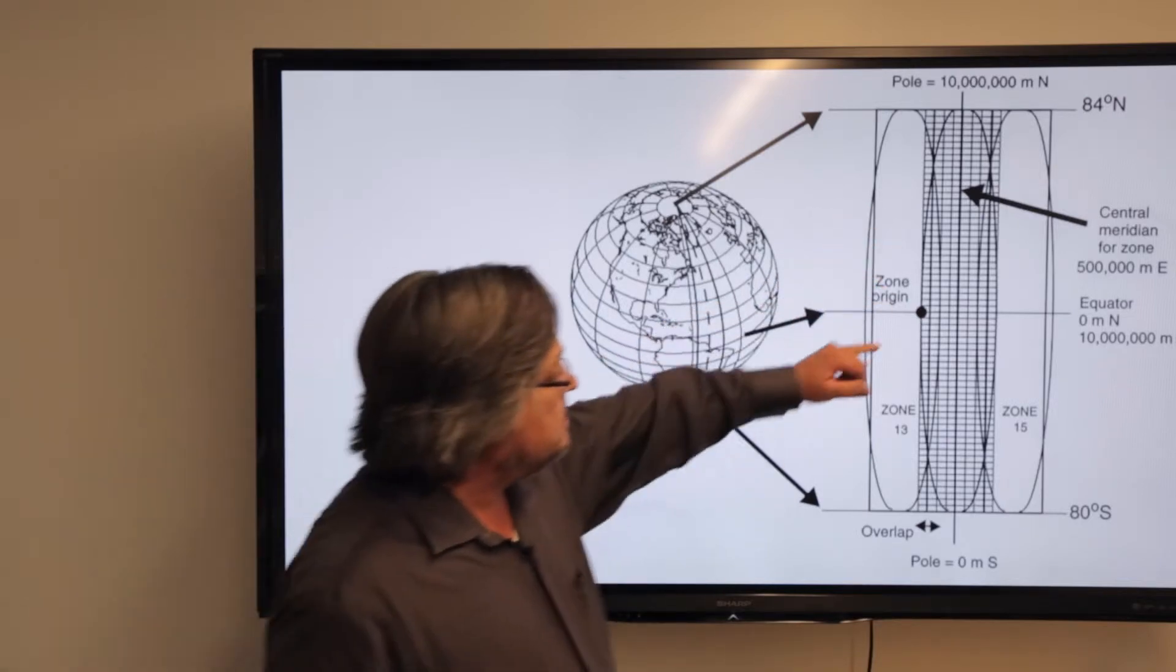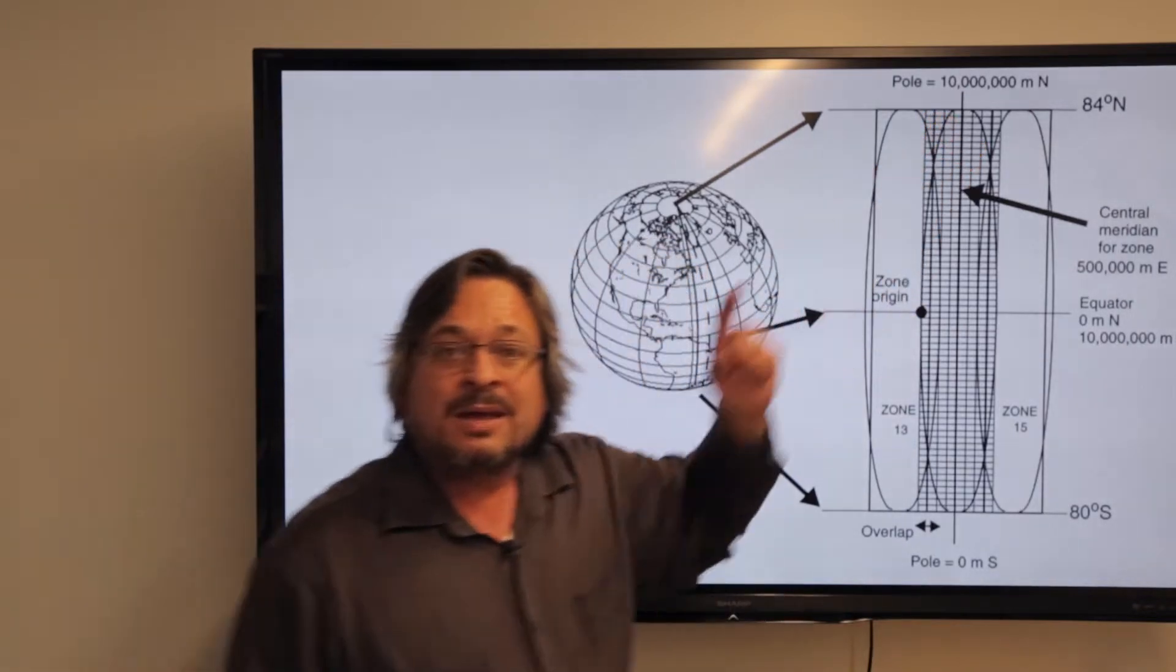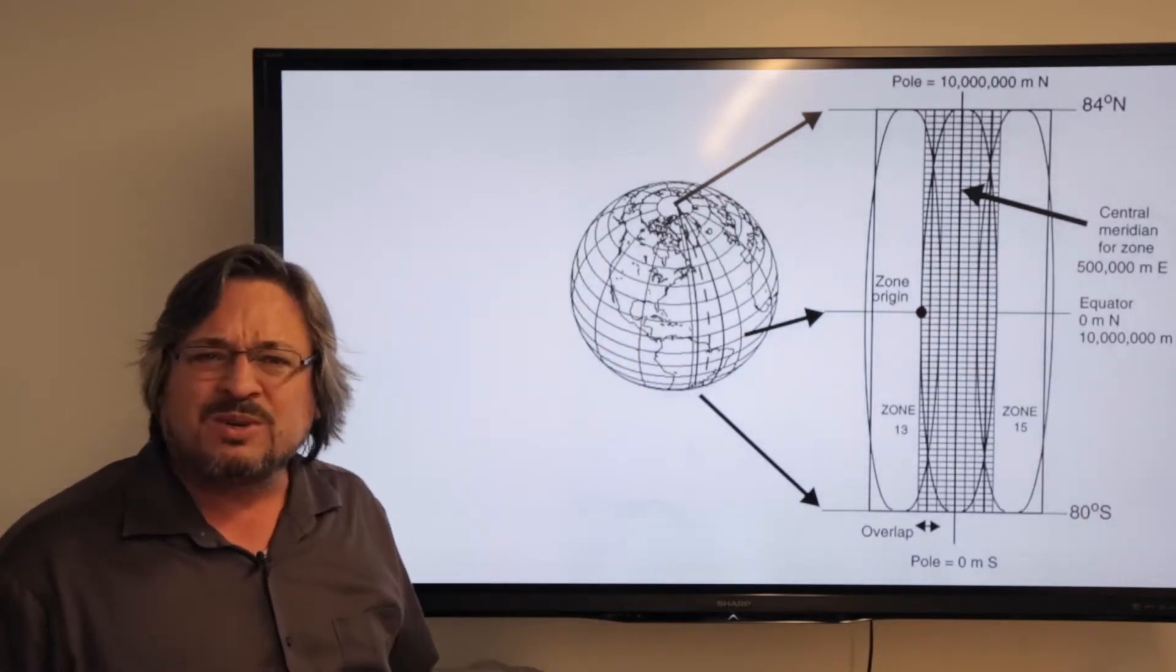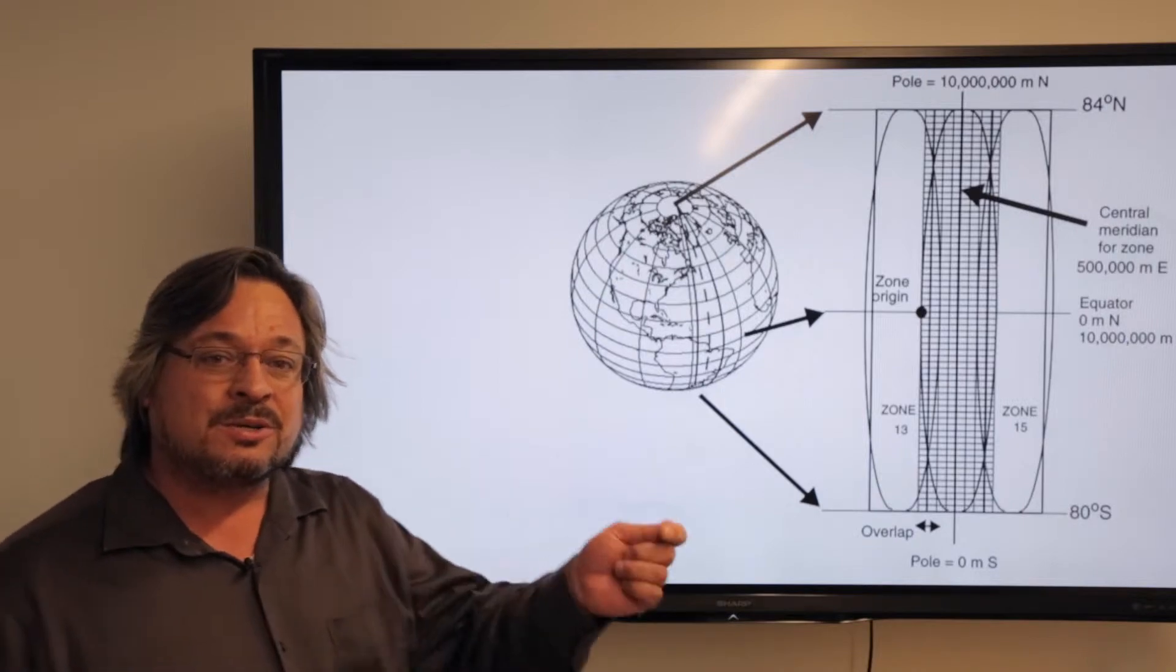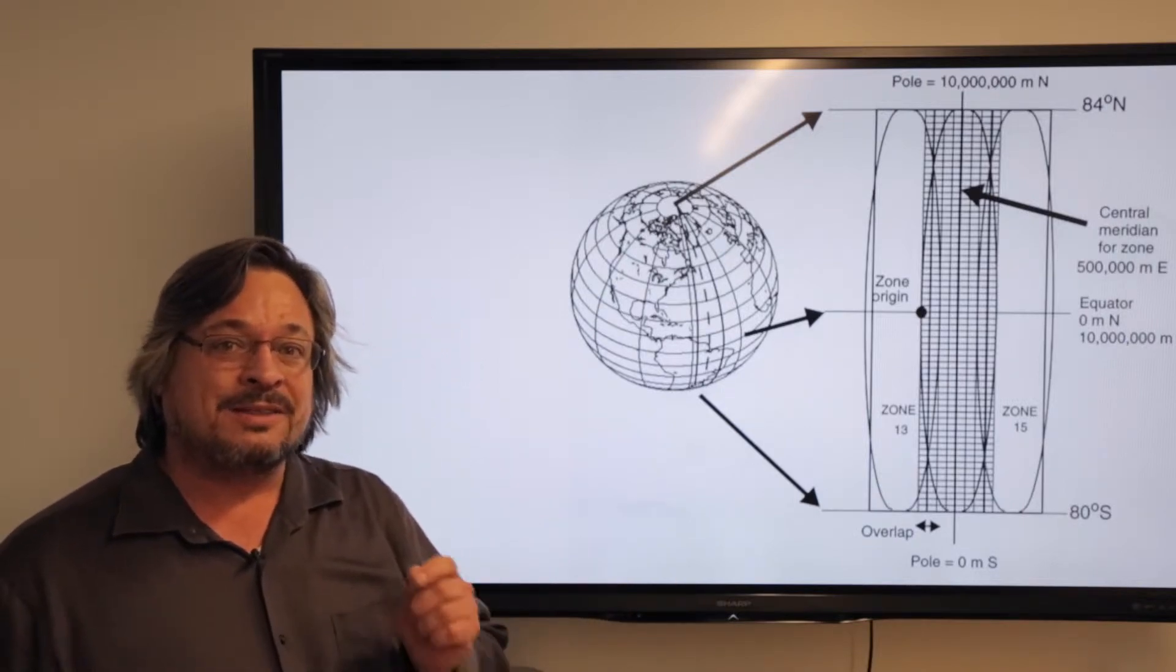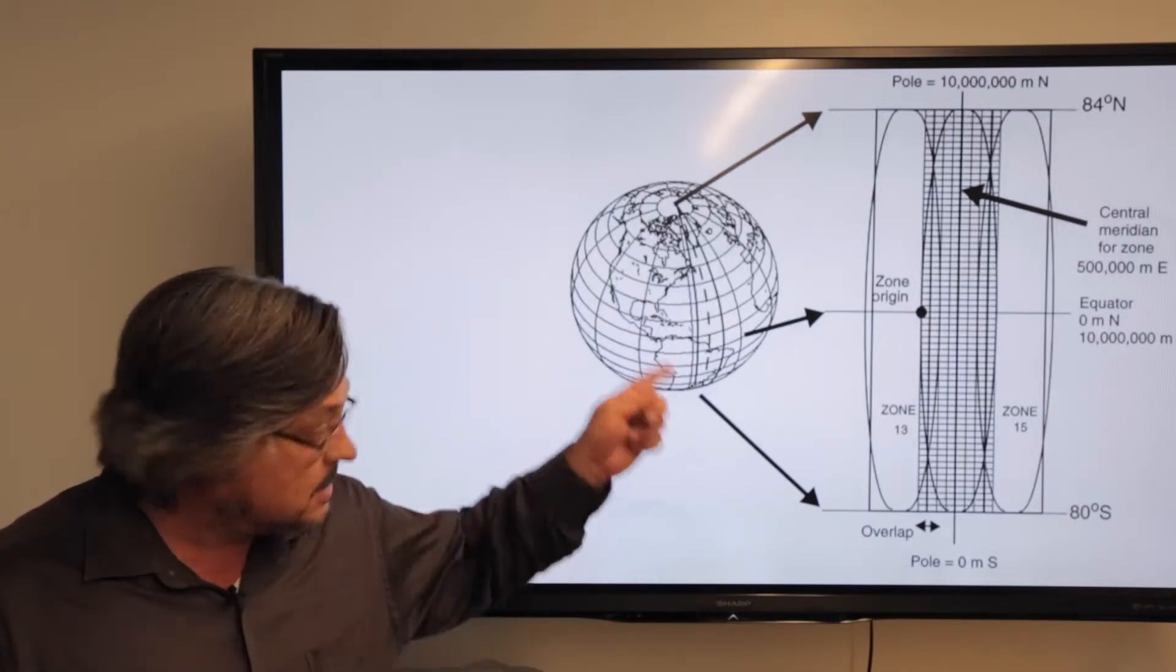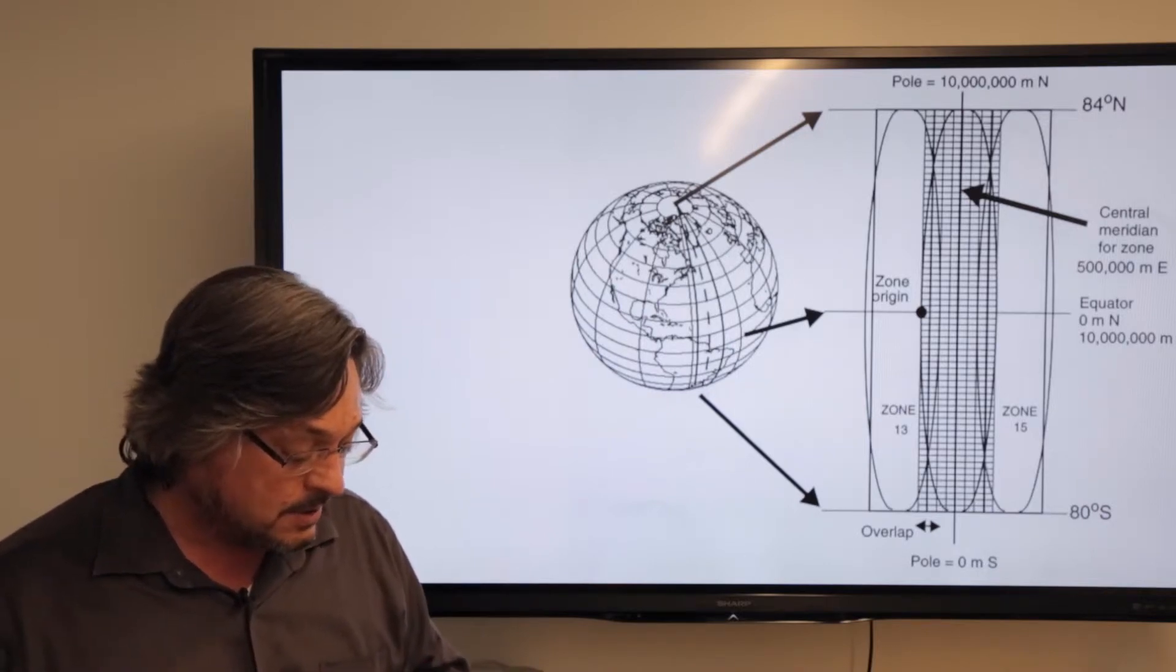If that becomes zero, the pole becomes 10 million. You might remember from the geodesy lecture, why 10 million? Well, it's 10 million meters from the equator to the pole. Remember how the definition of the meter is one ten-millionth the distance from the equator to the pole on a line through Paris, France? That's taking advantage of that idea. It's all based on the metric system.